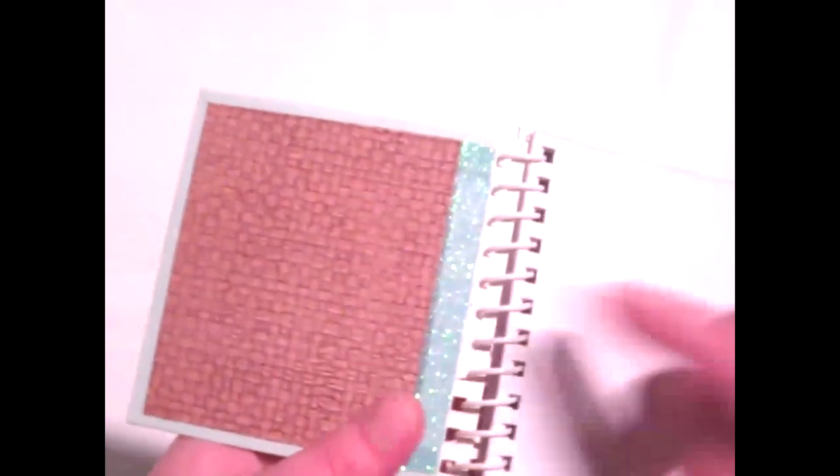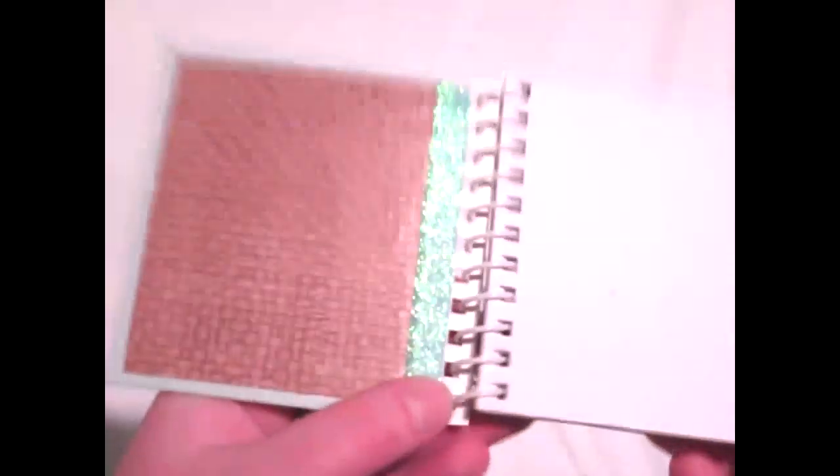Now on the inside, I put some of this basket-looking paper, woven paper, and covered up the fact that it wasn't quite long enough by using some very sparkly blue washi tape. And it works that way for the front and back.